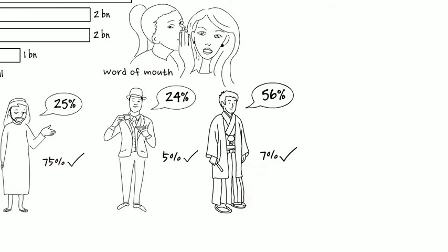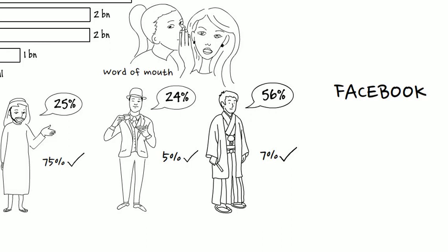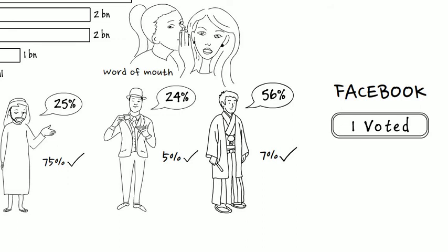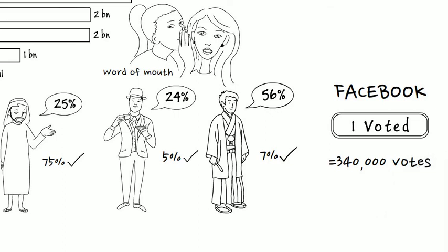Our perceptions affect our behavior, perhaps even our voting preferences. In 2010, Facebook conducted an experiment by randomly deploying a non-partisan 'I Voted' button into 61 million feeds during the U.S. midterm elections. That simple action led to an additional 340,000 votes, a number that could swing an election. Facebook had shown itself to be an influencer.